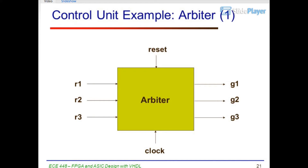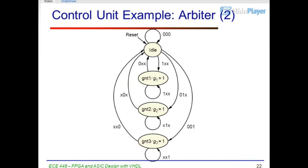Control unit example: Arbiter. Inputs: reset, R1, R2, R3. Outputs: G1, G2, G3. Clock. EKI-448, FPGA and ASIC Design with VHDL. Control unit example: Arbiter, part 2.